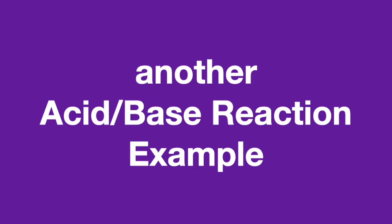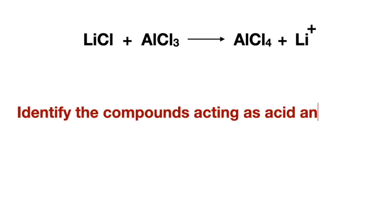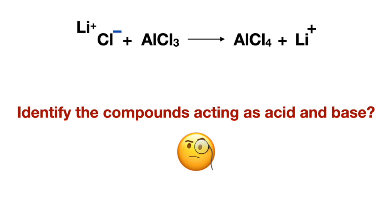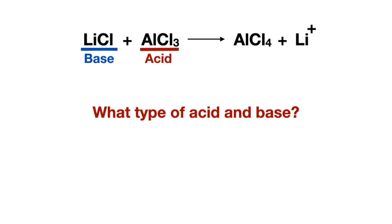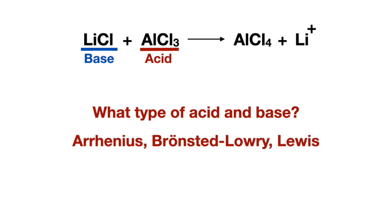Let's try another example. This reaction might make your head spin when identifying the acid and base, but we'll use the same simple fundamentals. Let's remove the highly soluble positively charged alkali metal on the left reactant to see that we have a negatively charged atom, which means it's the base, making the other reactant the acid. Now, there's no proton or proton donor, so it can't be Arrhenius or Bronsted-Lowry, which leaves us with Lewis acid and Lewis base.